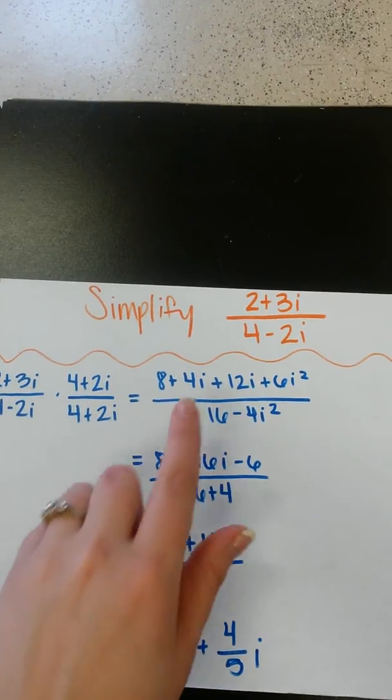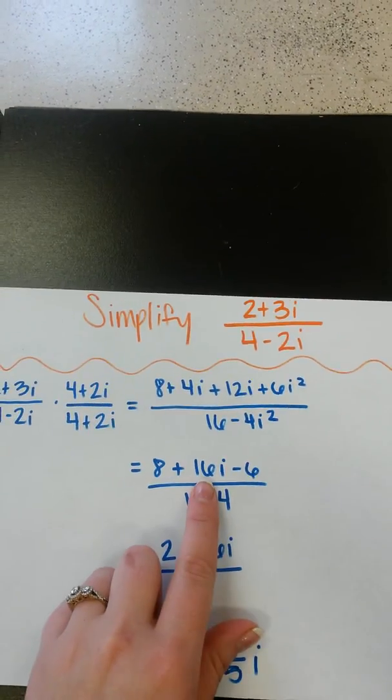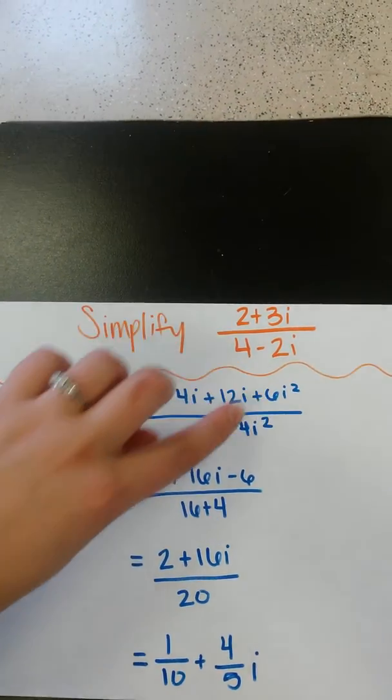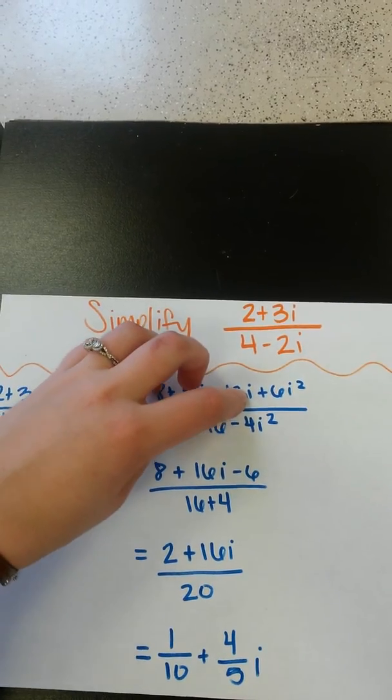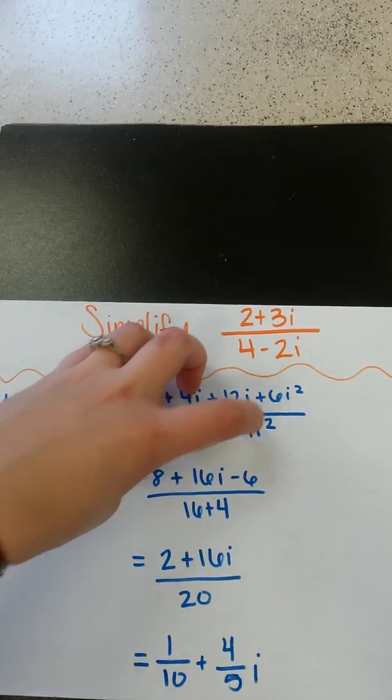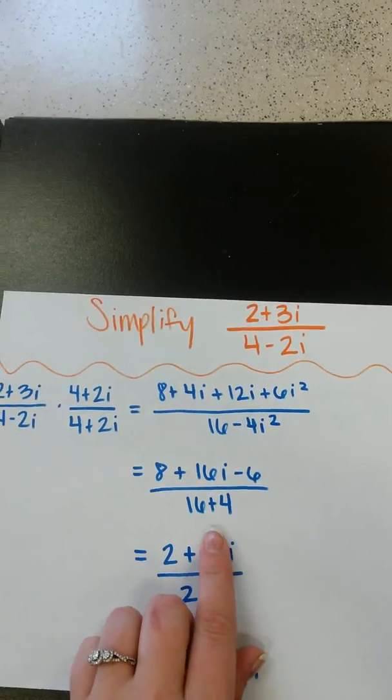We just add like terms, such as this combines to 16. Also, what we did here was, since we have i squared in the numerator and denominator, we just canceled that out. So we're left with this.